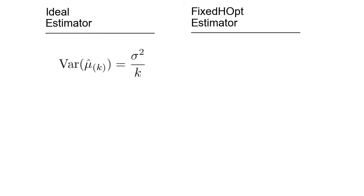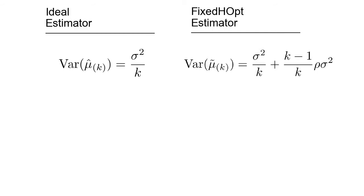If we look at the variance of the ideal estimator, we see that it converges to 0 as k tends to infinity. For the fixed h-up estimator, it has the variance of a sum of correlated variables, because of the correlation induced by the usage of a fixed set of hyperparameters. The correlation factor rho will bound the lower limit of the variance as k tends to infinity. But we never train an infinity of learning algorithms — how does it look in a reasonable regime of k?